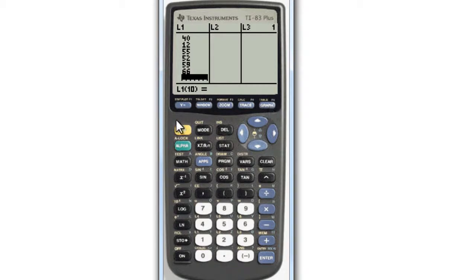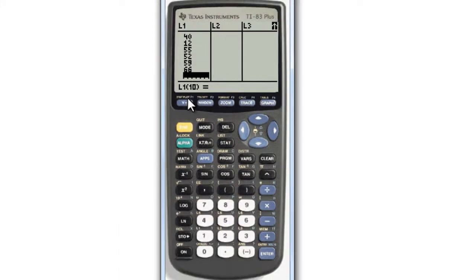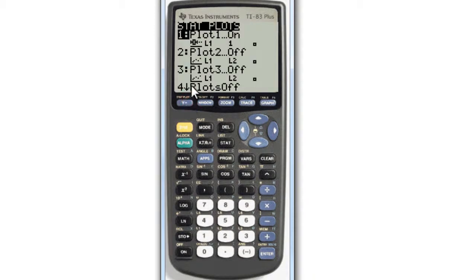turn on the STAT plot by pressing 2nd and then Y equals. When you press 2nd, this yellow button, it allows you to choose the yellow items listed above the standard numbers. Above Y equals, it says STAT PLOT. When you press that, you get the STAT PLOT menu.